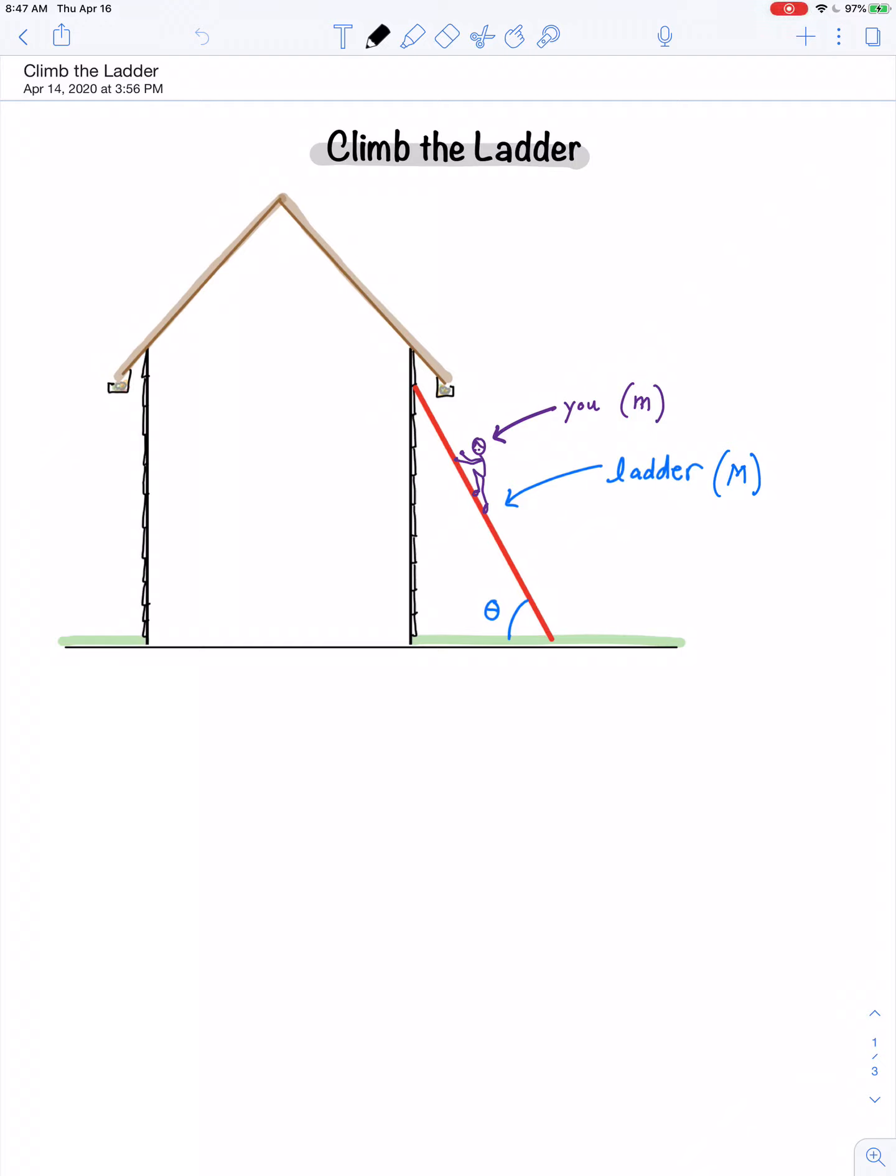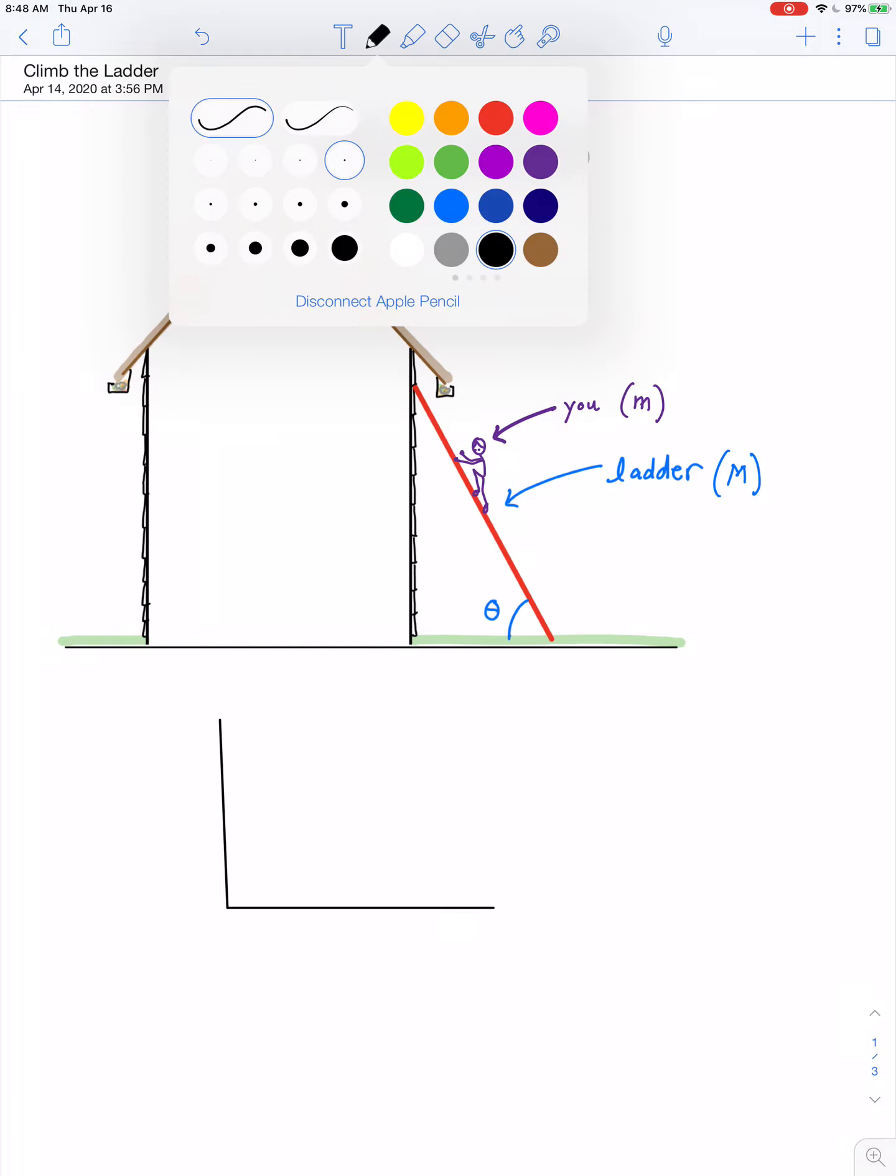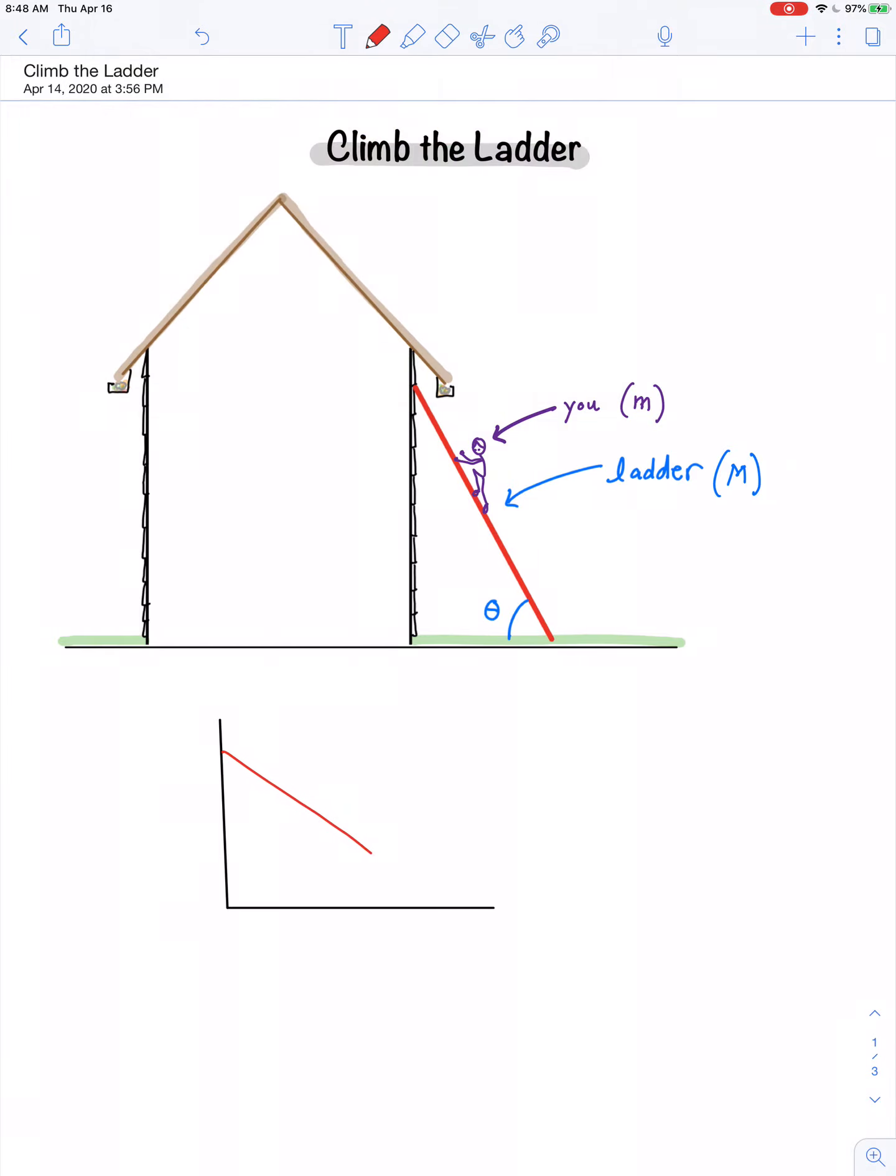In the previous video lesson, we studied a leaning ladder and found that if there's no friction at the wall and only friction at the ground, there's an equation that describes the minimum possible angle that the ladder can lean and still maintain equilibrium. We found that theta minimum, if there's a coefficient of friction at the ground, was equal to the inverse tangent of 1 over 2μ.